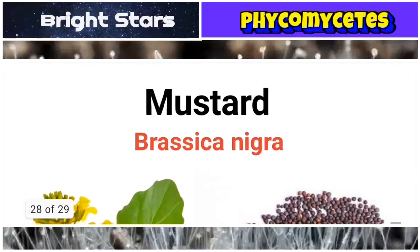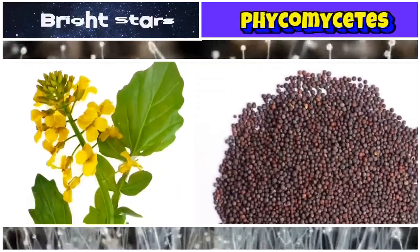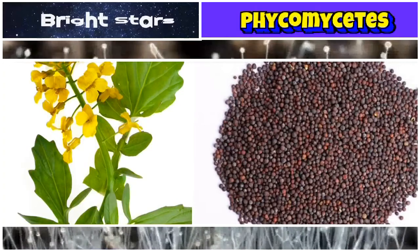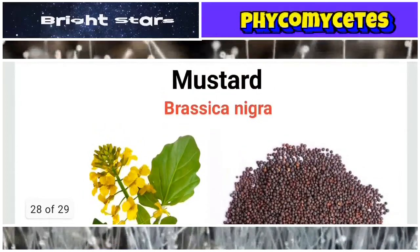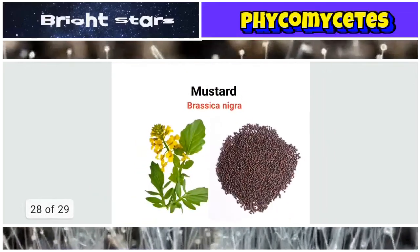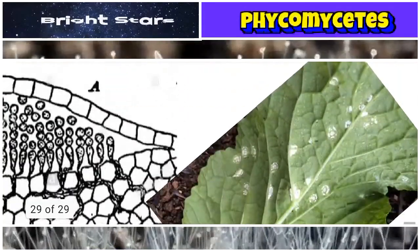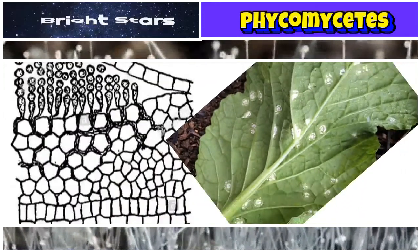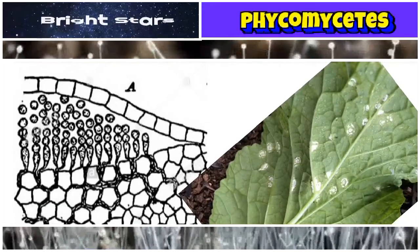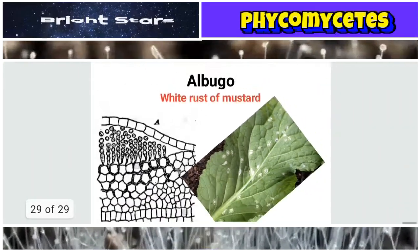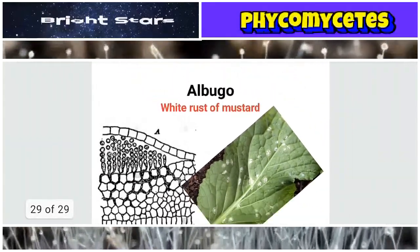Mustard is the common name for Brassica nigra, a common condiment plant. Brassica nigra is the host for a Phycomycetes genus called Albugo, which causes white rust of mustard. White pustules form on the leaves of the mustard plant. In a cross-section of the leaf seen under the microscope, the fungal structures — mycelia, asexual spores, and other parts — can be observed. This genus is called Albugo.